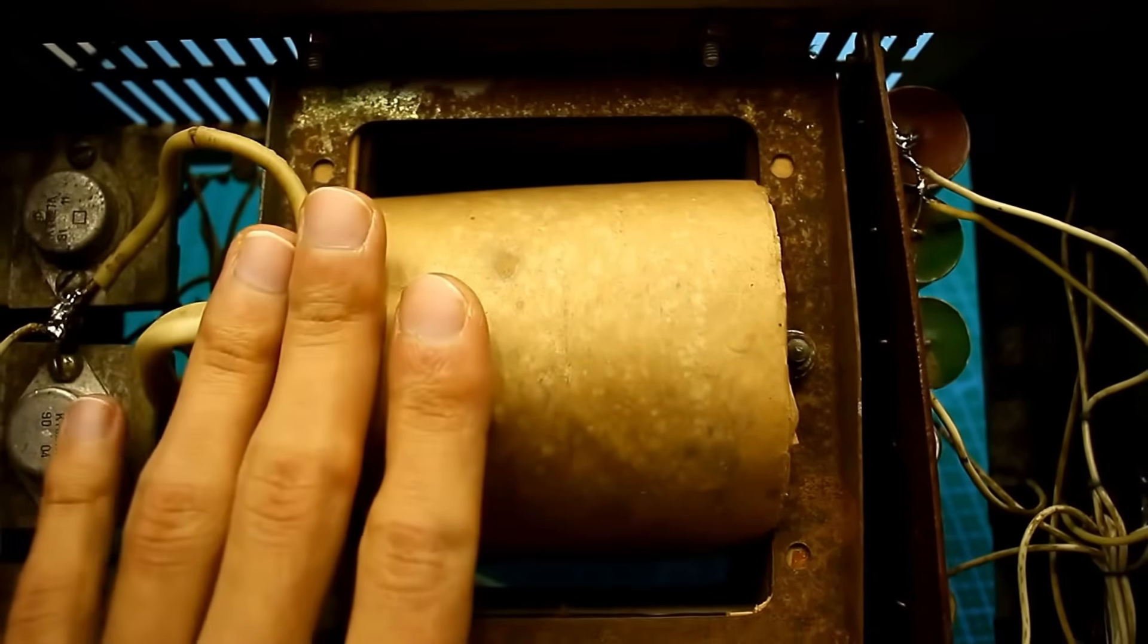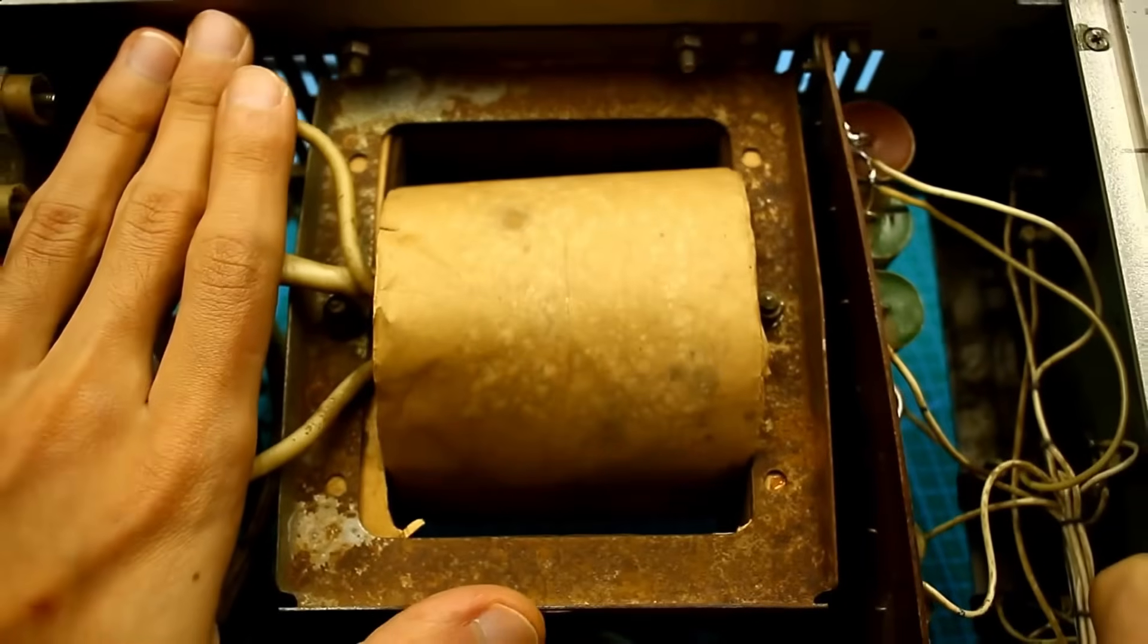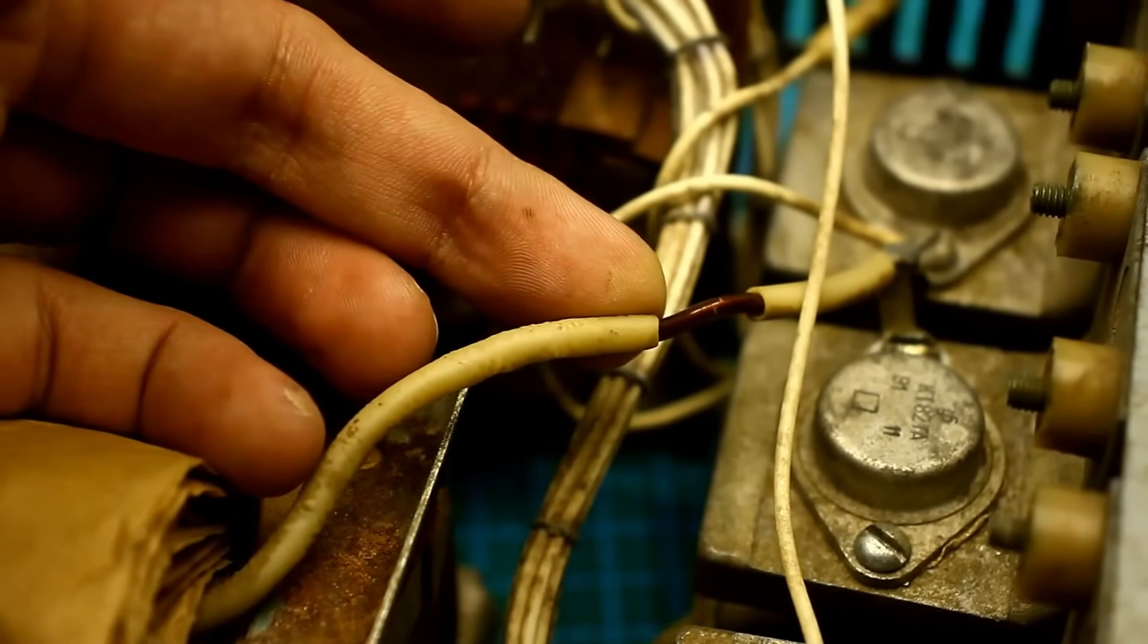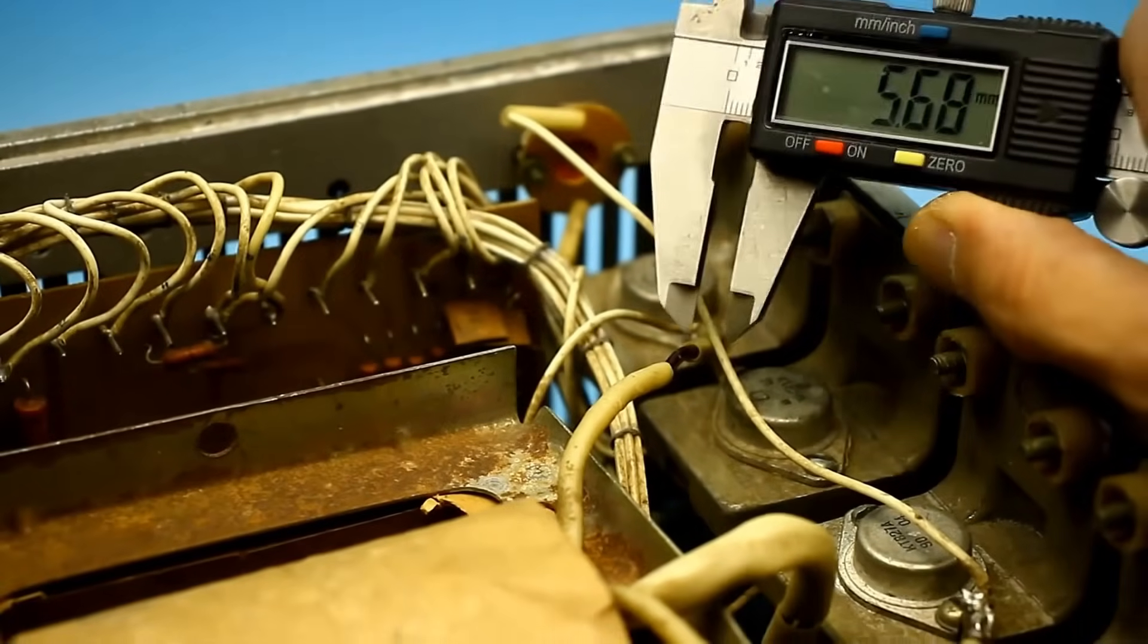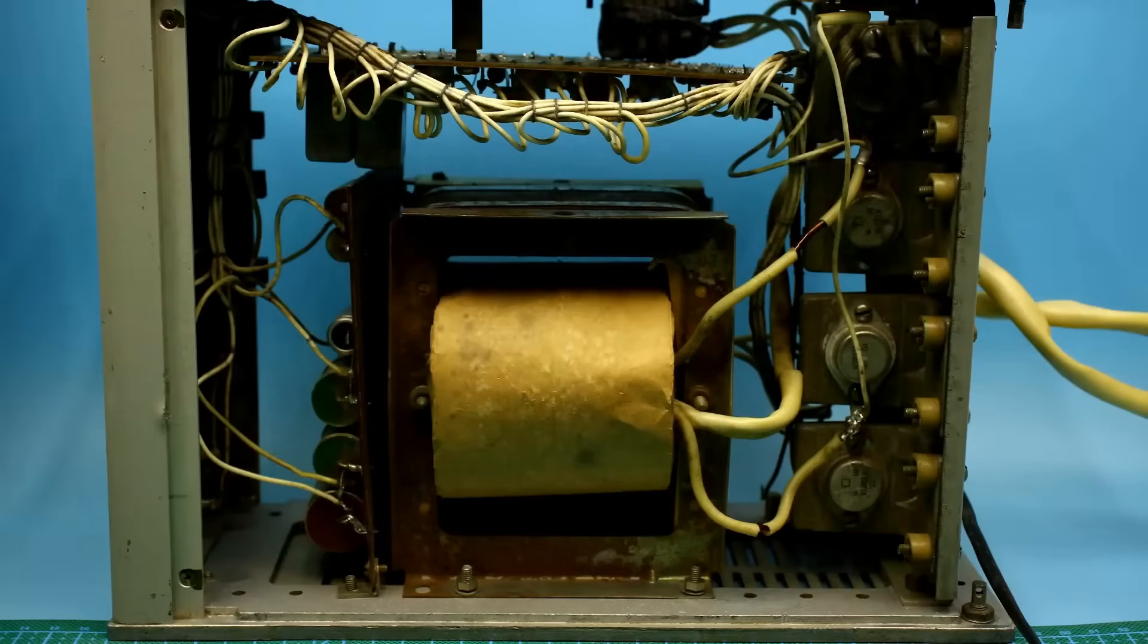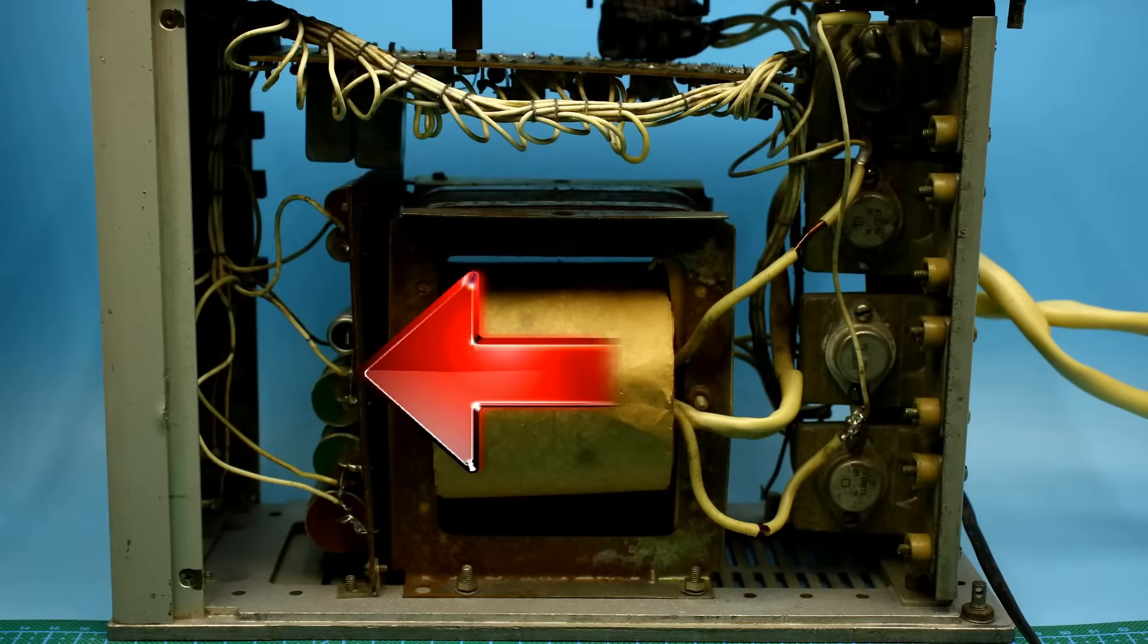So it's quite a robust transformer. The power is about 350 socialist watts, but it can easily deliver a kilowatt. The windings are copper. In the secondary circuit, the wire diameter is 2mm. Overall, the device consists of four units: a transformer, a control board, power transistors, and a capacitor block.